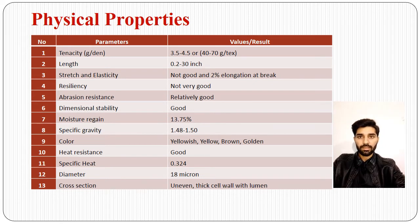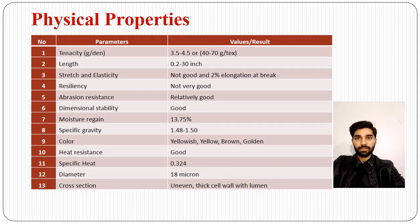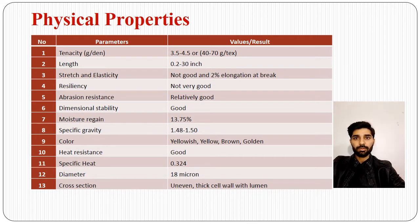It has a length of 0.2 to 30 inches. It has not good stretch and elasticity, with 2.2% elongation at break. It has not very good resiliency and relatively good abrasion resistance. It also has good dimensional stability, 13.75% moisture gain, and 1.48 to 1.5 specific gravity. Its color is yellowish, yellow-brown, or golden.